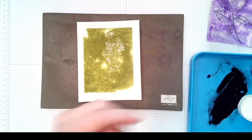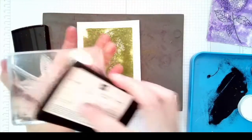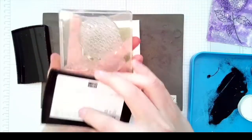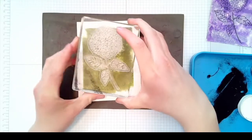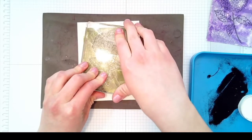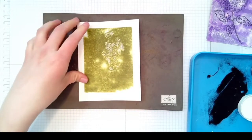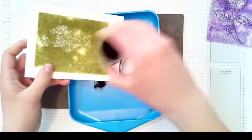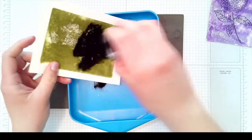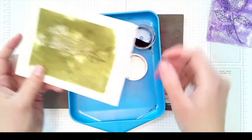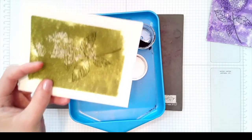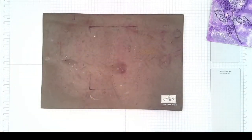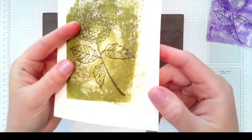I inked up my hydrangea stamp and this time we're only gonna do the bottom half, just the leaves down at the bottom here. We will stamp that down on the green background we've created and put some black embossing powder on that and heat it with the heating tool.